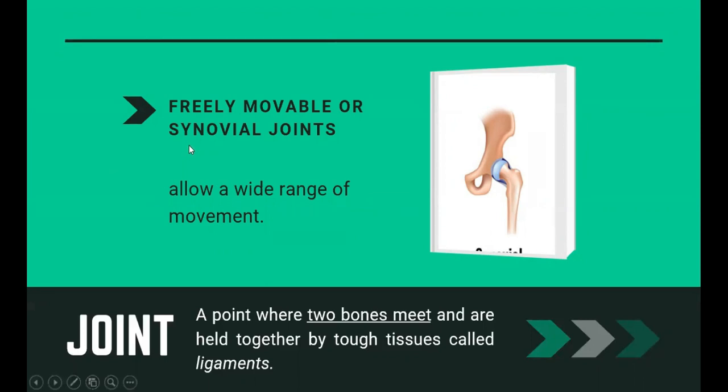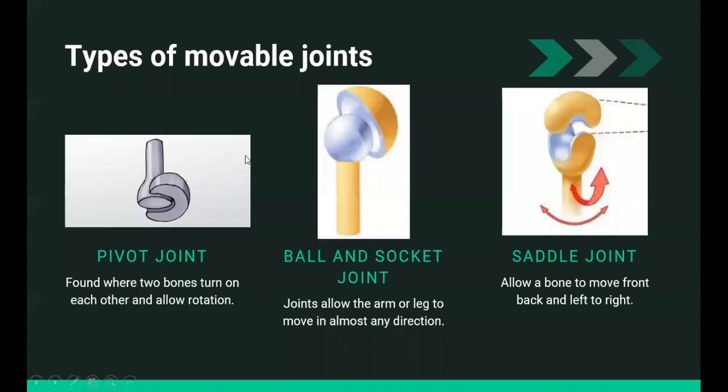Now let's talk about the types of synovial joints. The pivot joint is found where bones turn on each other and allow rotation. The top two vertebrae that support the skull form the pivot joint that allows the head to turn left and right. The elbows are also part of the pivot joint.